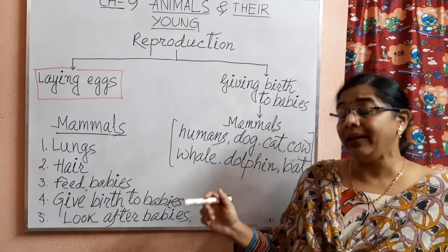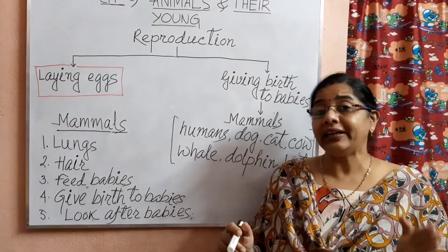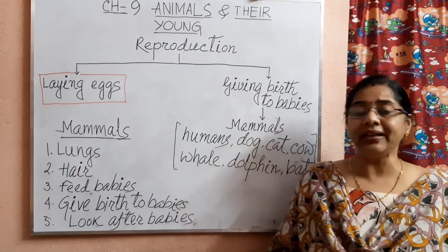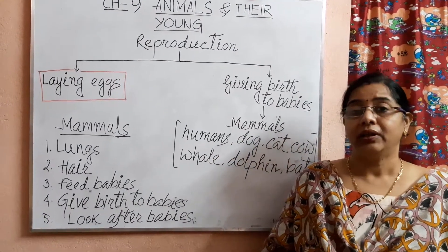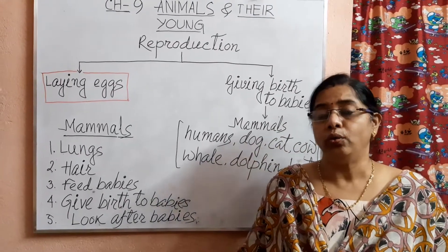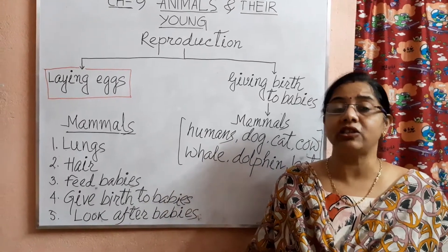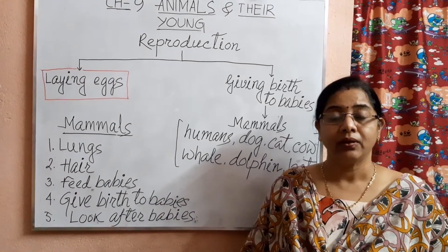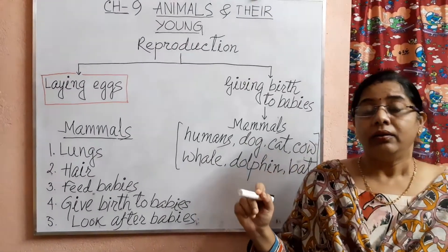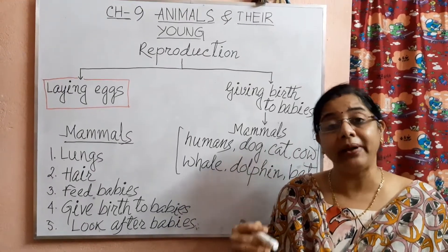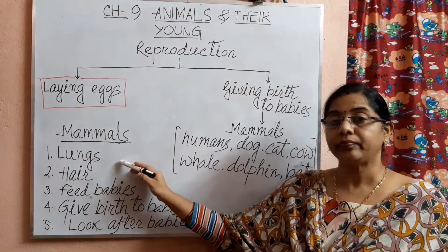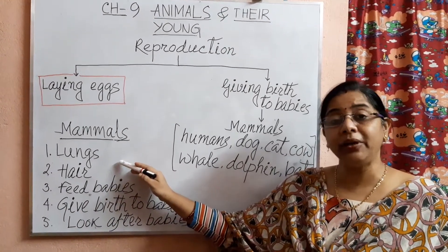Mammals have a well-developed brain. All of you know that human beings have a well-developed brain, that's why we can perform different activities on this earth's surface. Similarly, all the mammals have a well-developed brain. All the mammals breathe through lungs.